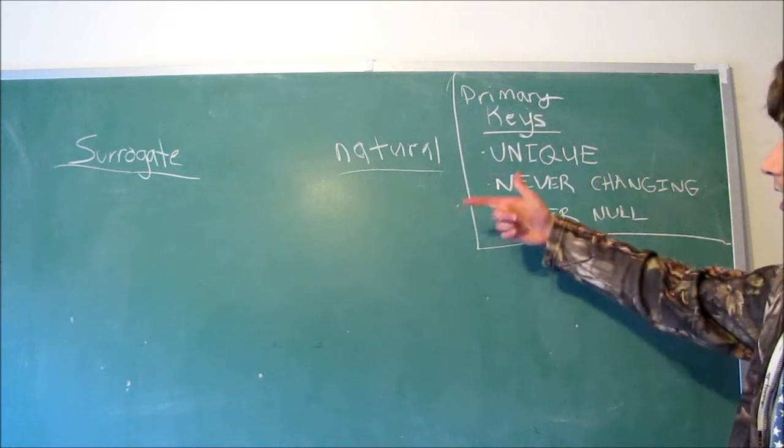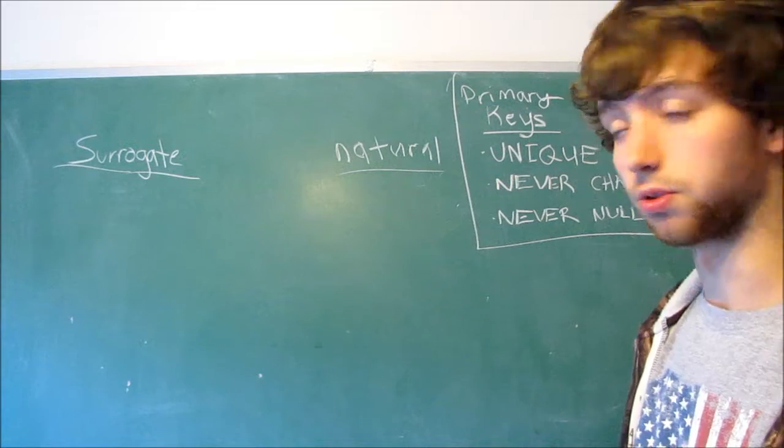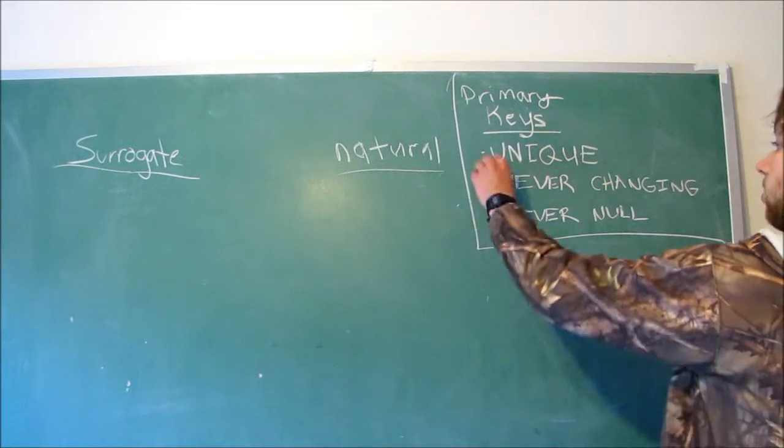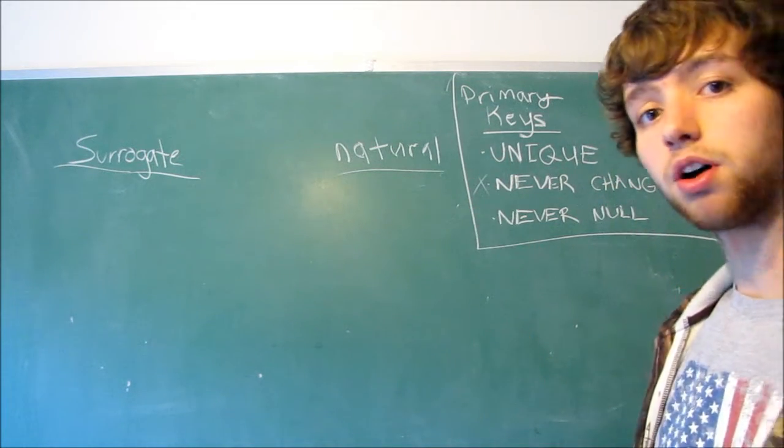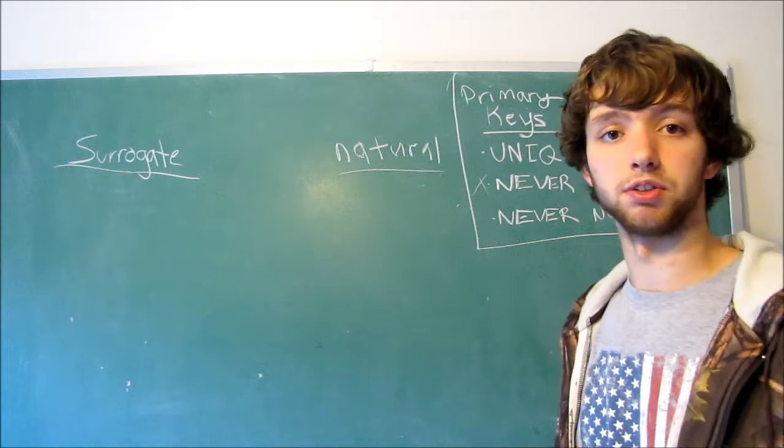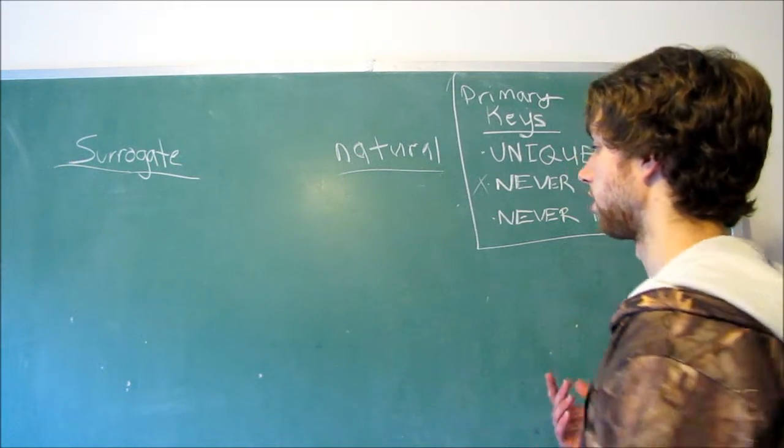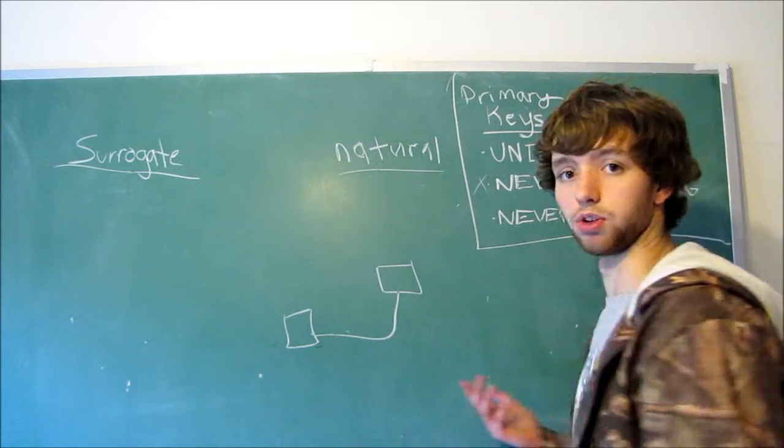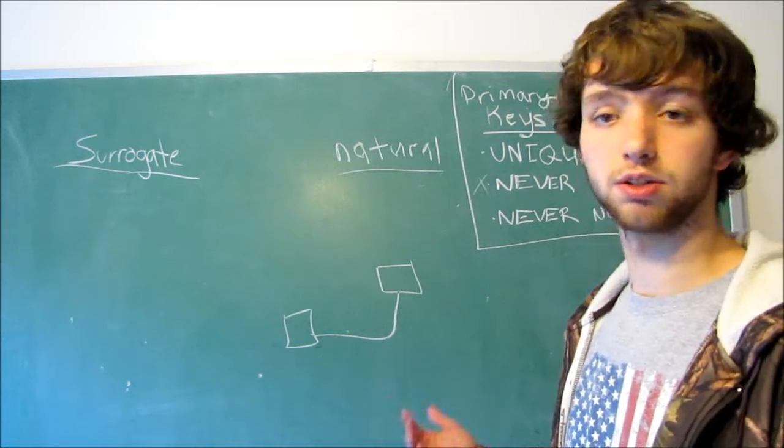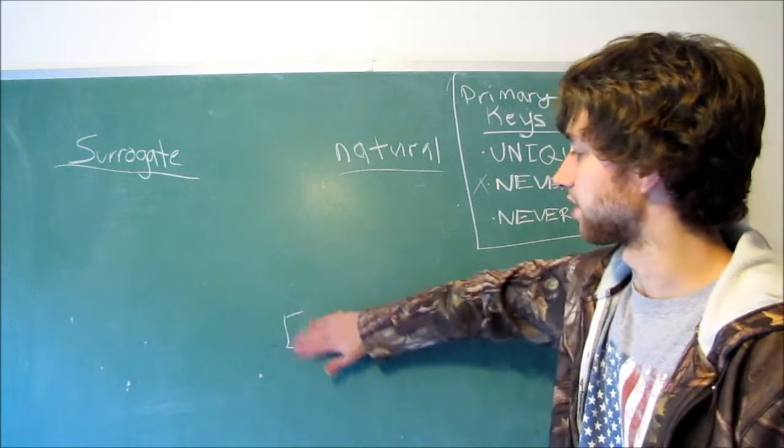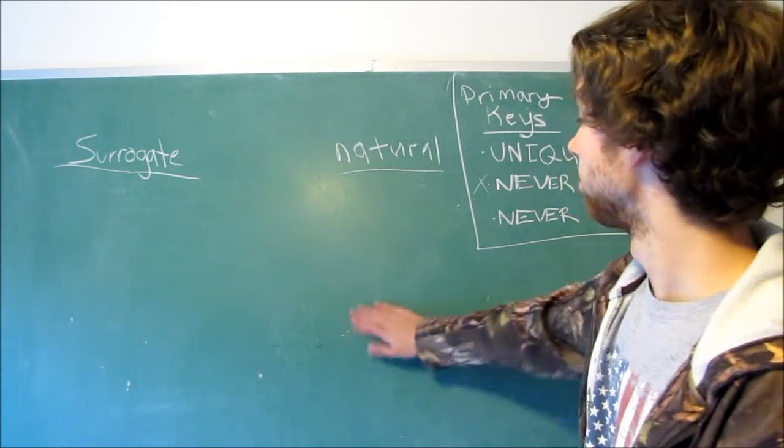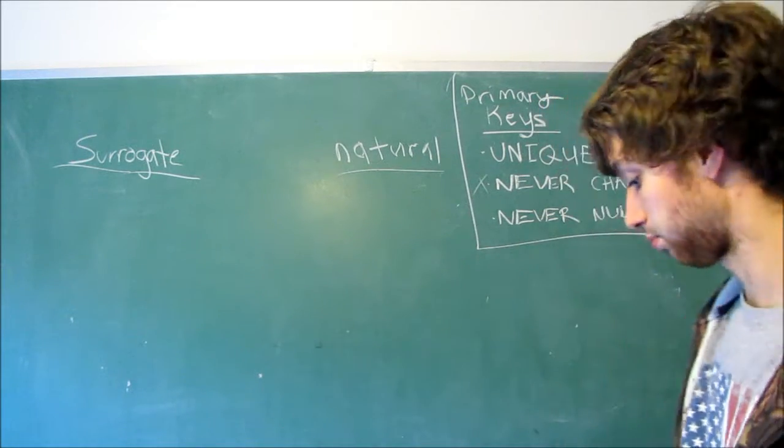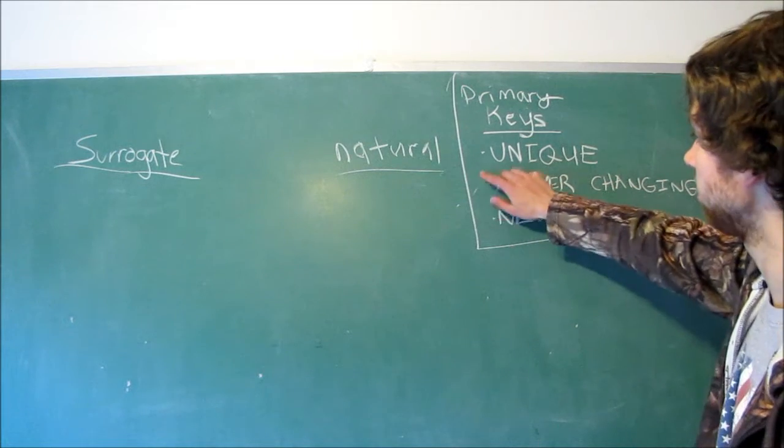If, for example, we make it to where we do have to change the natural keys, well, that would kind of be like crossing this one out, and that's possible. Like, we could update the values of all the keys, but that's going to require us to update all connections between tables, and that's going to require a lot of resources from our server, and that's just a bad design in general. So those are most of the cons of natural keys.